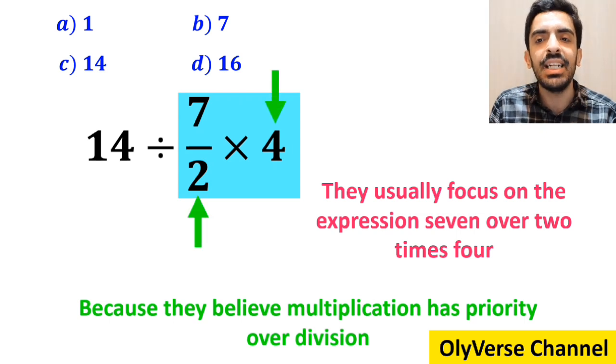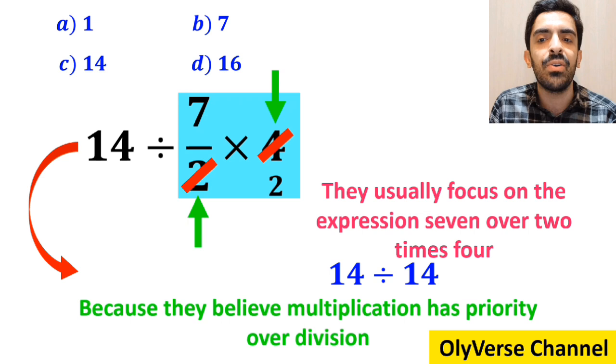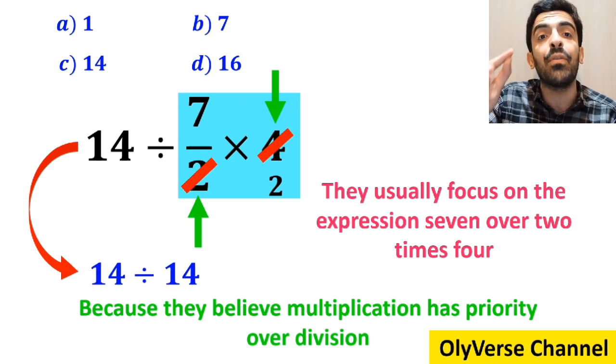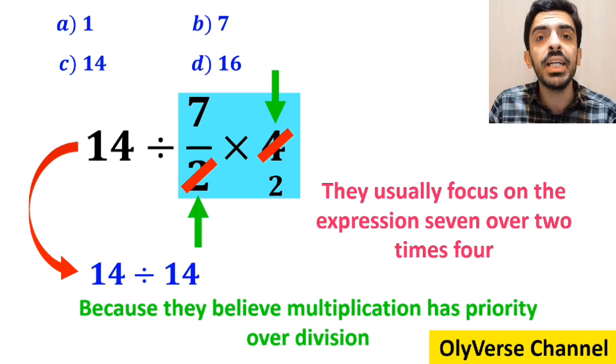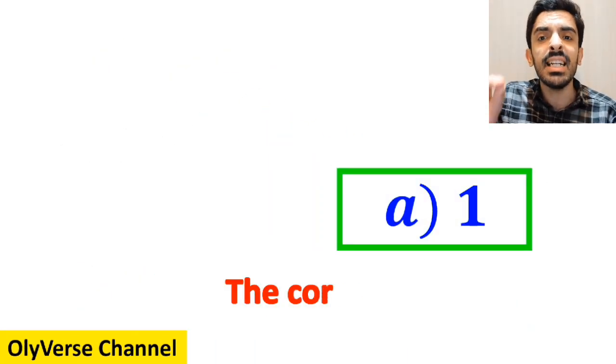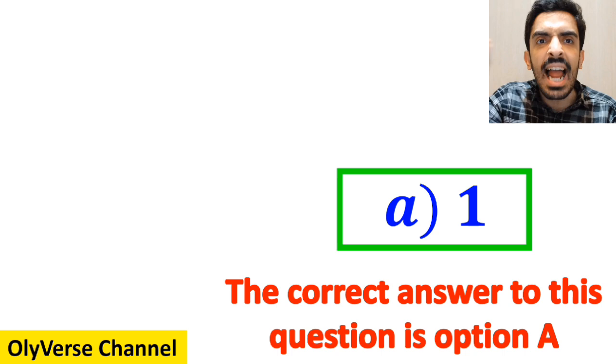As you can see in the image, they very easily cancel out 4 with the 2 in the denominator, and write this expression as 14 divided by 14, which eventually gives them the answer 1. And without any hesitation, they quickly say that the correct answer to this question is option A.